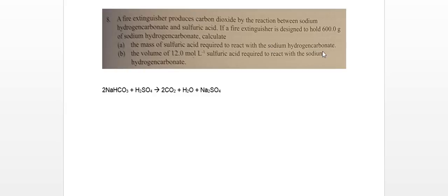First thing you always do for this is write for yourself an equation, so you can see the ratios of whatever is reacting with whatever else. In this case, we see that two sodium hydrogen carbonates react with one sulfuric acid to make carbon dioxide, water and sodium sulfate.